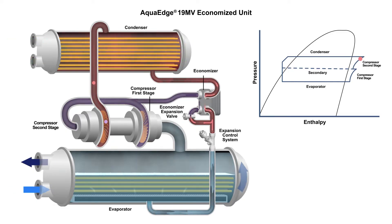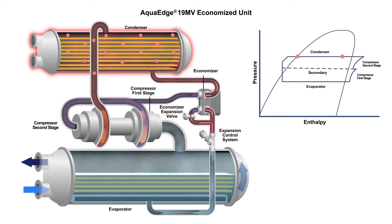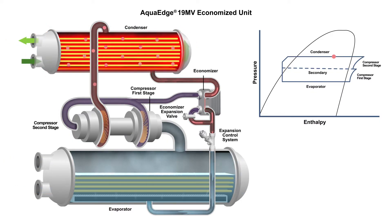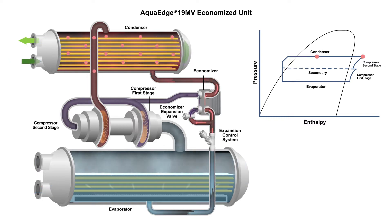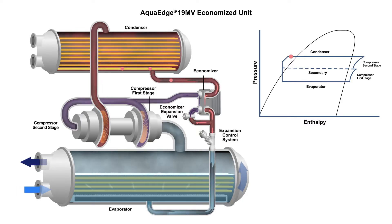The vapor now exits the second stage compressor and enters the 19MV's condenser. Water flowing through the condenser tubes removes energy from the refrigerant vapor. The vapor condenses to a liquid, collecting in the sensible subcooler at the bottom of the condenser. The subcooler extracts additional heat from the liquid refrigerant, reducing its temperature before it continues toward the economizer.